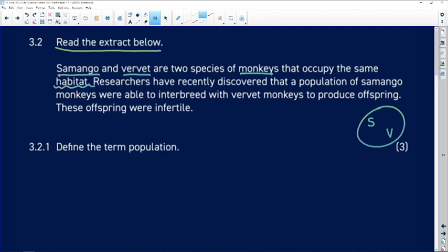Researchers have recently discovered that a population of Samango monkeys were able to interbreed with vervet monkeys to produce offspring. But those offspring were infertile.